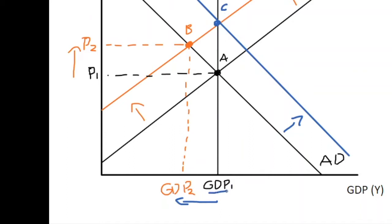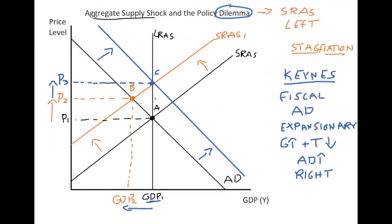We see the GDP level has returned to its potential output. However, the dilemma that ensues is in terms of prices — because if we bring this new long-run equilibrium over to the price axis, what we see is that this discretionary policy has increased the price level even further. Under these conditions, yes, the government can return the economy to its natural or potential output level, but this trades off higher levels of inflation, which will increase the cost of living, reduce the purchasing power of money, and may have a negative effect on workers in terms of wages and other parts of the economy.